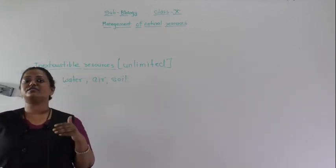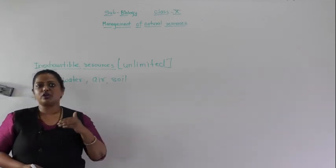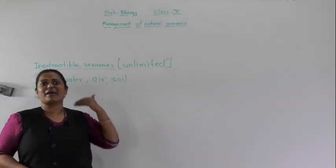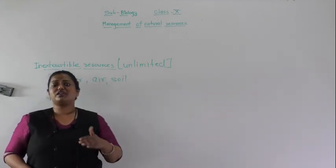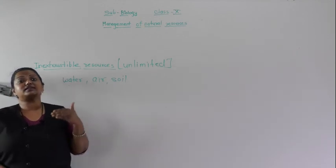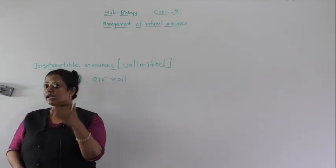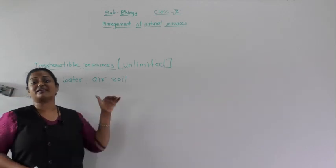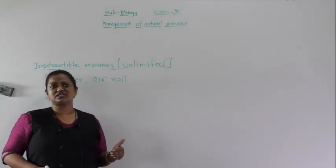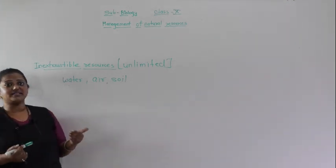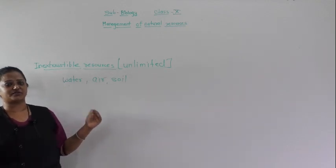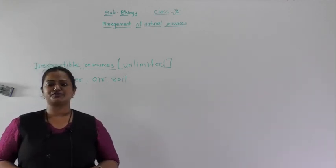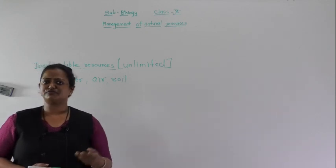Based on this, there are two other types of resources: renewable resources and non-renewable resources. Renewable resources are those we can get back, reuse, and utilize again and again. Non-renewable resources are those we cannot get back. You will learn more about these in the natural resources lesson, where there is a specific lesson designed for them. Here I have finished the introductory part of the management of natural resources. Tomorrow we will go ahead with the further topic. Thank you.